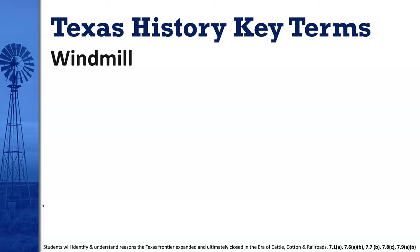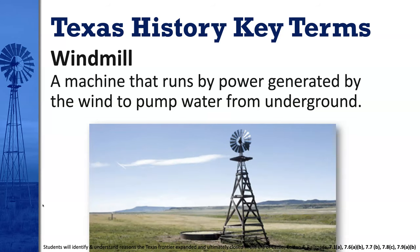Our next key term is windmill. A windmill is a machine that runs by power generated by the wind to pump water from underground. As the wind blows the turbine and it spins, it causes the mechanism attached to the windmill to move up and down and pump water from a pipe deep underground. This allowed farmers and ranchers to not have to rely so much on rainfall and existing above-ground water sources like rivers, lakes, and creeks to provide water for their animals and crops.